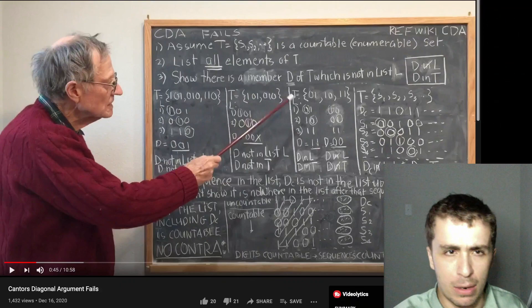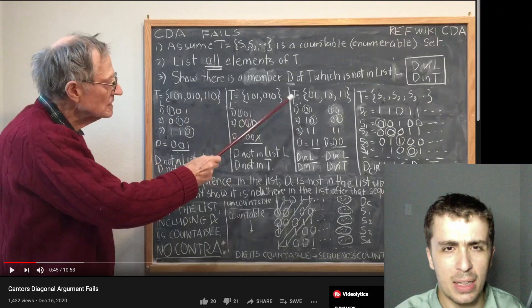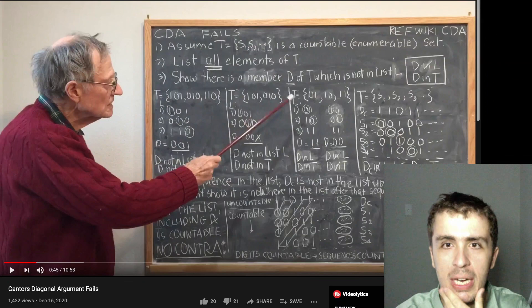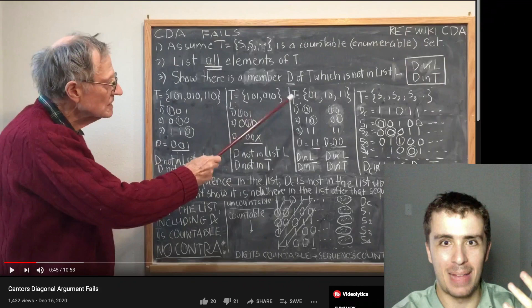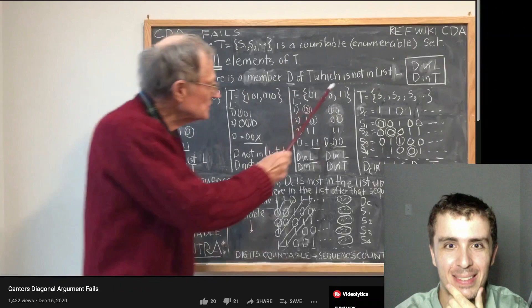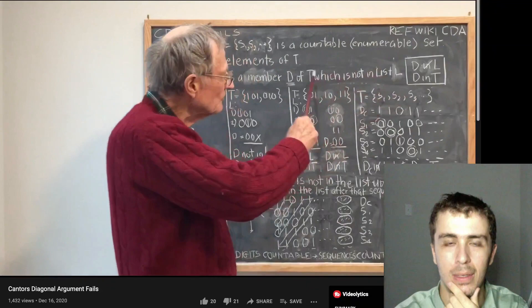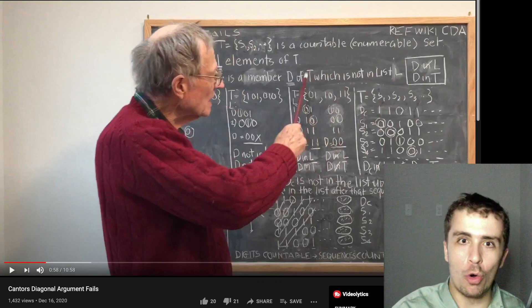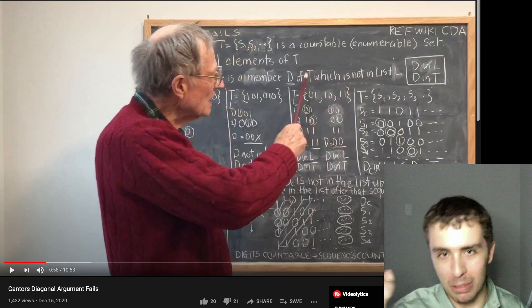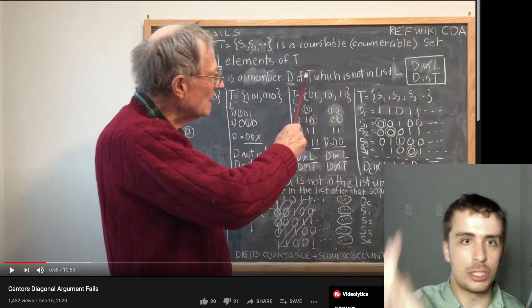The video says to 'show there's a member d of T which is not in the list L,' but there's no list L defined — I'm assuming L is s1, s2, etc. Also, T is a set with no order; you need to define something with an order to define what the first element is. You're assuming T is countable, so you can assume there's a specific ordering s1, s2, etc., but there's no mention of that here.